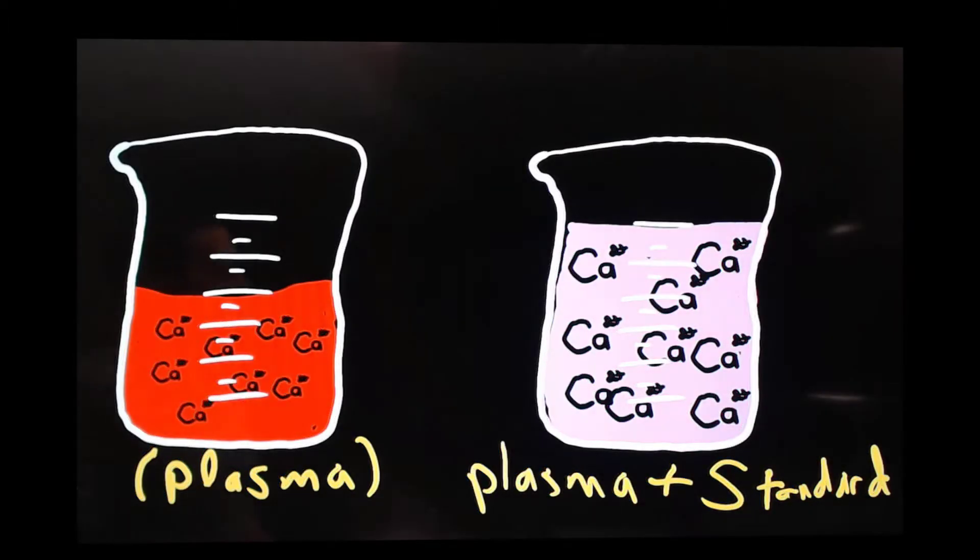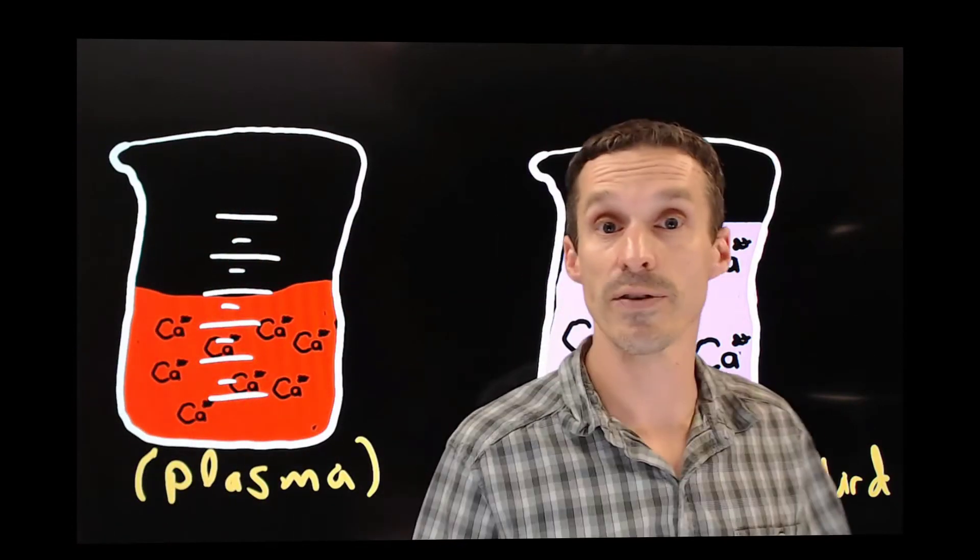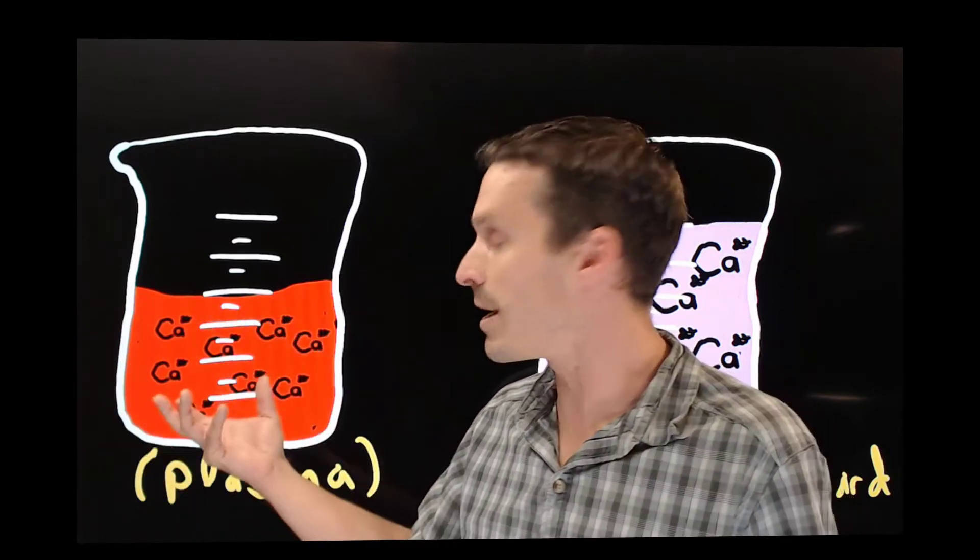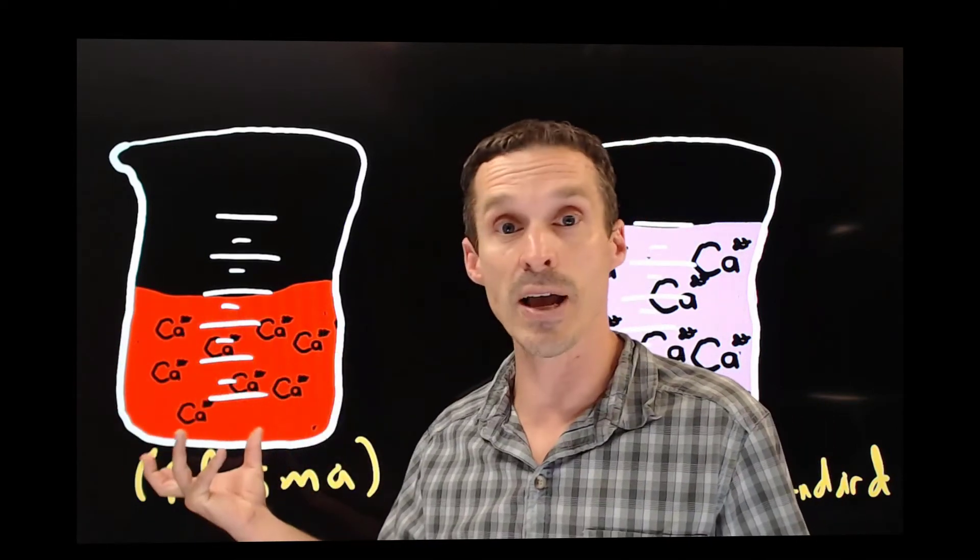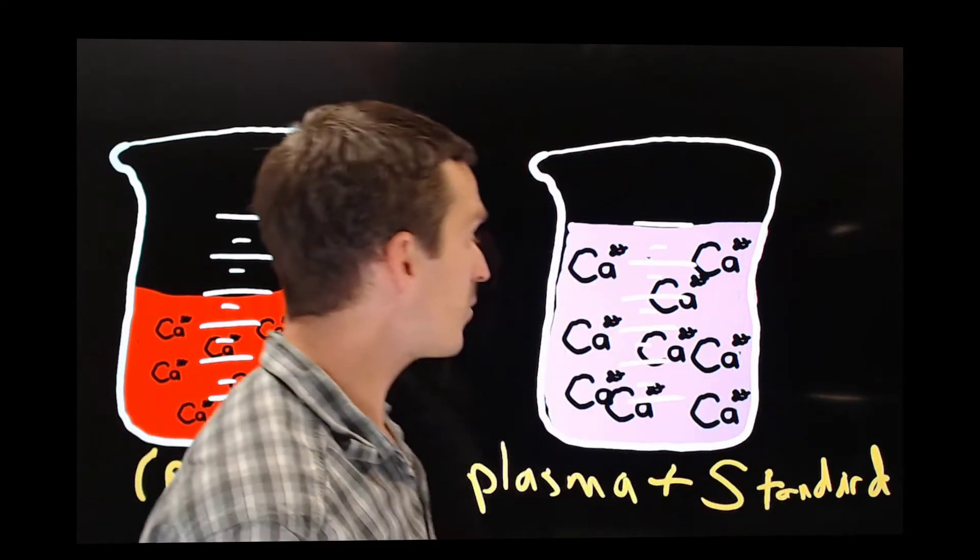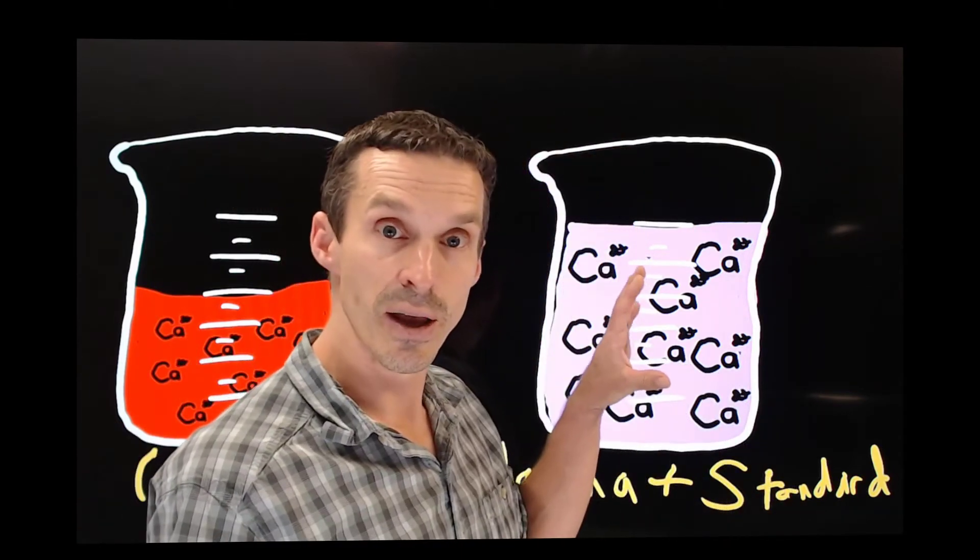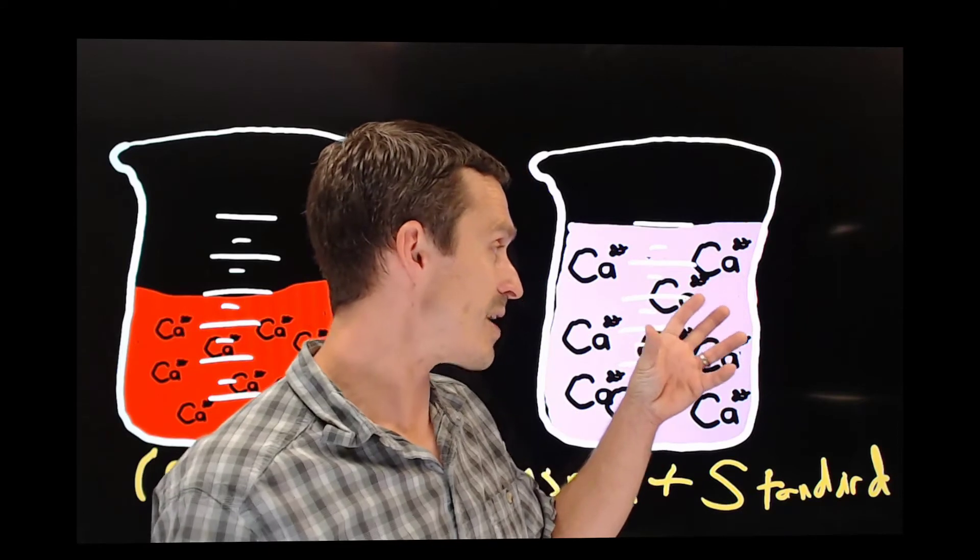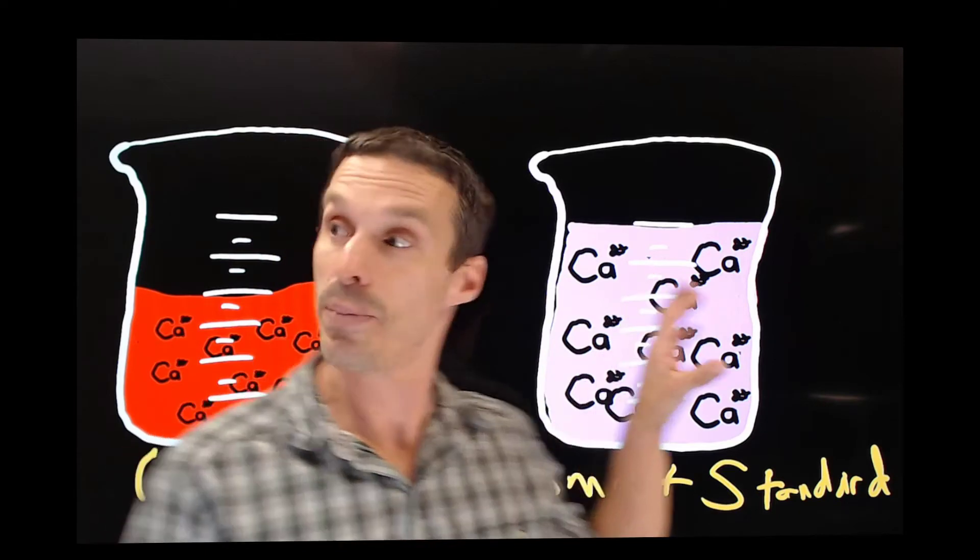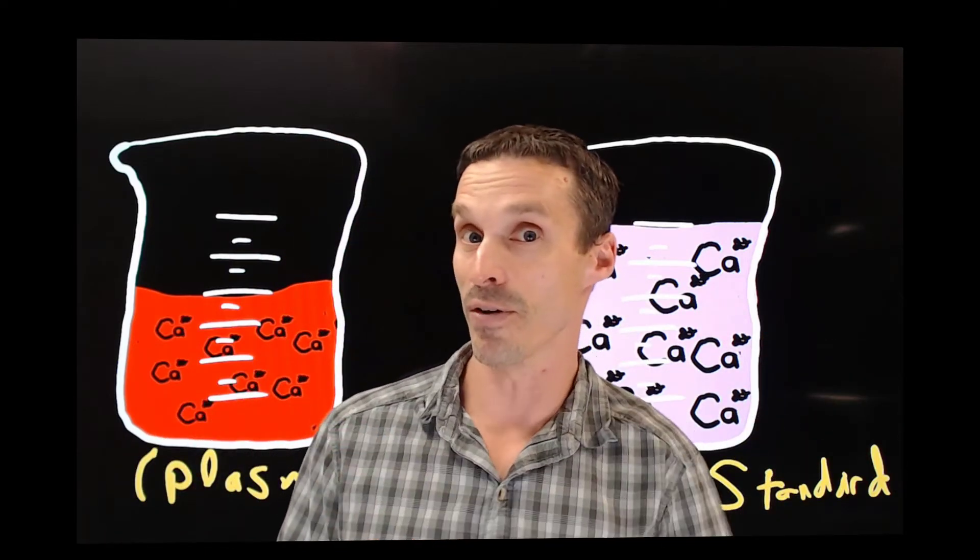So what you actually end up with are two different solutions. On the one hand, we have our unknown. It's just sitting there all by itself. We haven't done anything to it. It's just our plasma sample that contains a mystery amount of calcium in. On the other side, we have a mixture. It contains our standard, but it's actually combined with a little bit of that. What we know about this solution will help us to figure out that one over there.